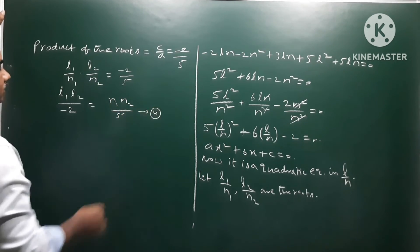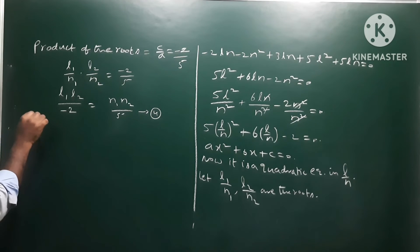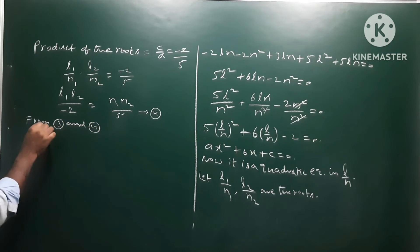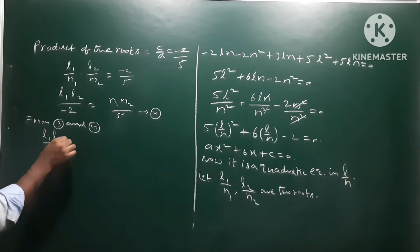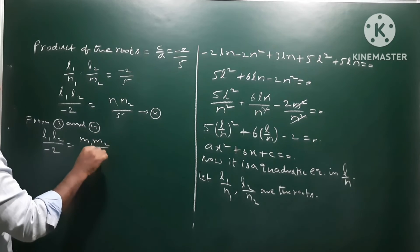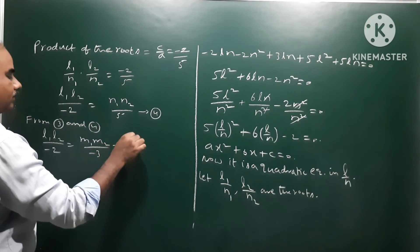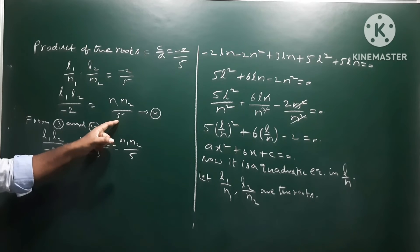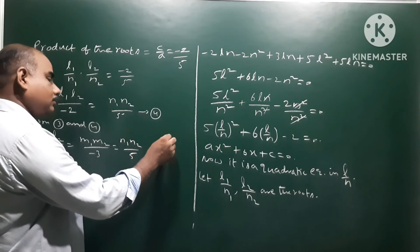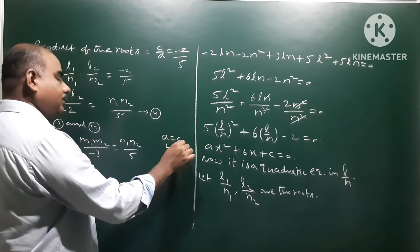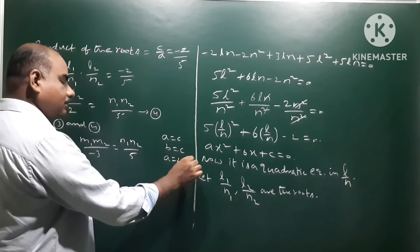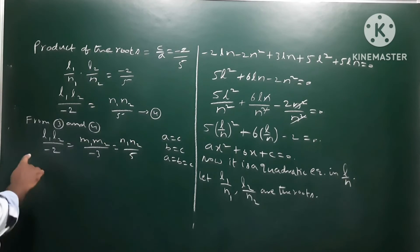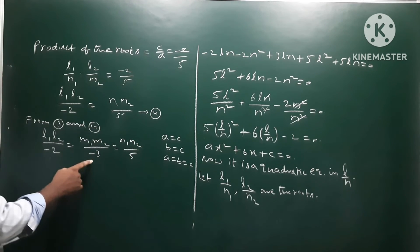From equations 3 and 4, we observe that l₁l₂ by minus 2 equals m₁m₂ by minus 3 equals n₁n₂ by 5. Using the equal ratio property, if A equals B equals C, then each equals a common value. So l₁l₂ by minus 2 equals m₁m₂ by minus 3 equals n₁n₂ by 5 equals k, a real number.